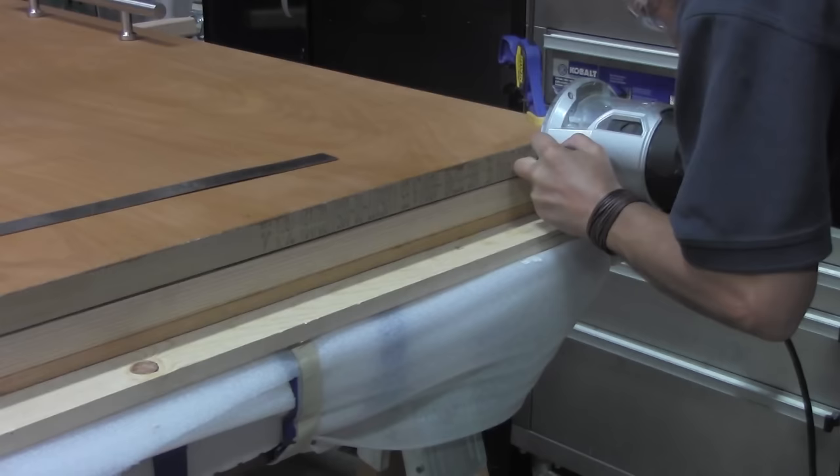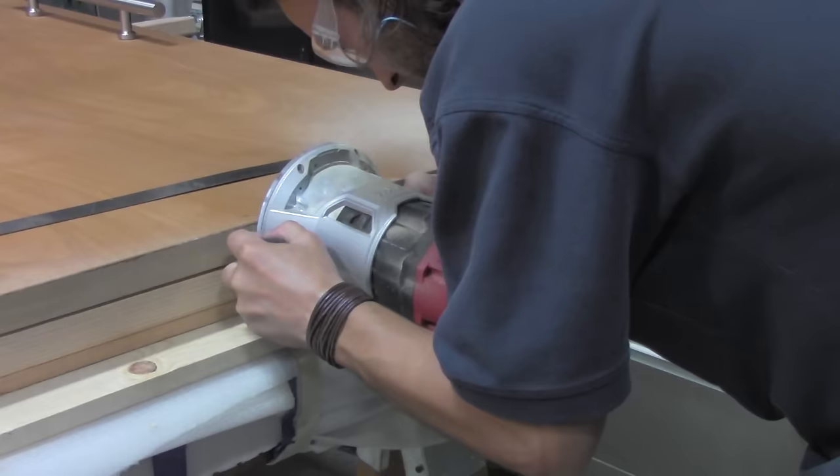Now moving on to prep the door for the floor bracket. The floor guide keeps the door in line and prevents it from swinging and hitting the wall. This bracket is fastened to the floor, but for the door to be able to glide over the floor guide, you'll need to route out the bottom of the door.